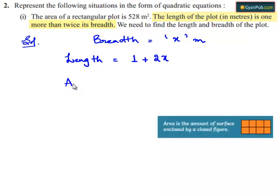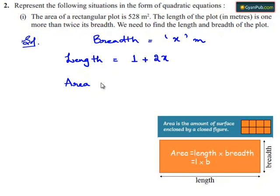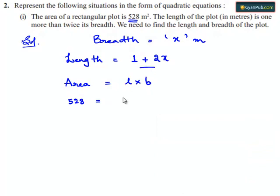We know that area of the rectangle is equal to length multiplied by breadth. The given area of the rectangular plot is 528 square meters. The length is 1 plus 2x, and the breadth is x.